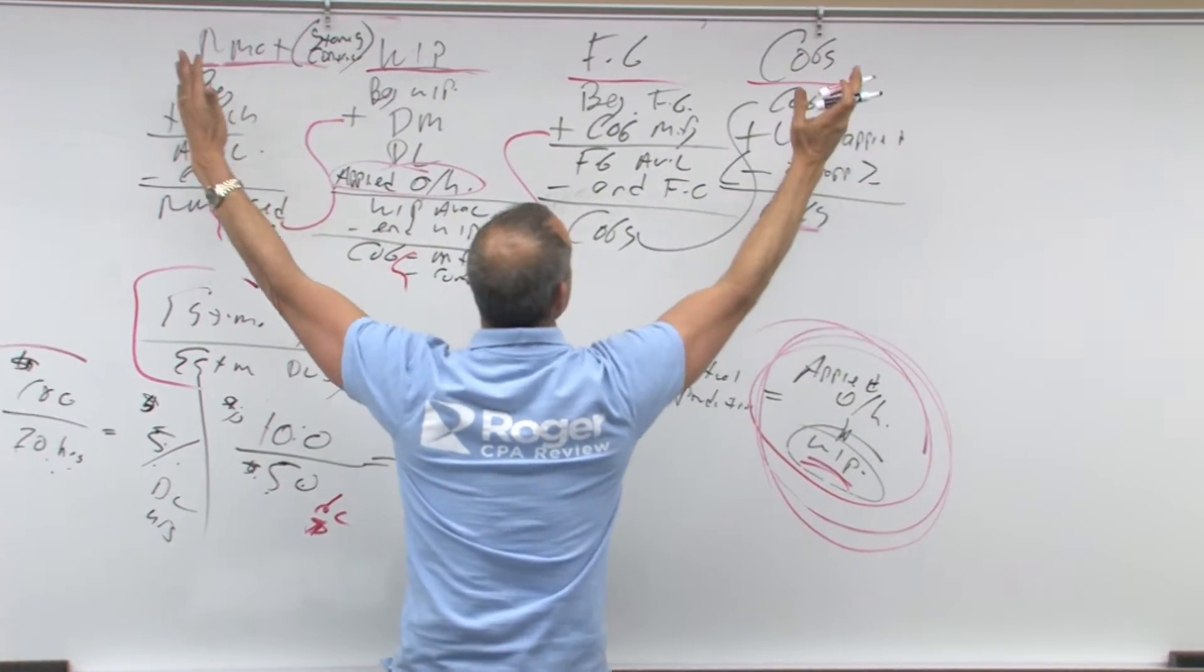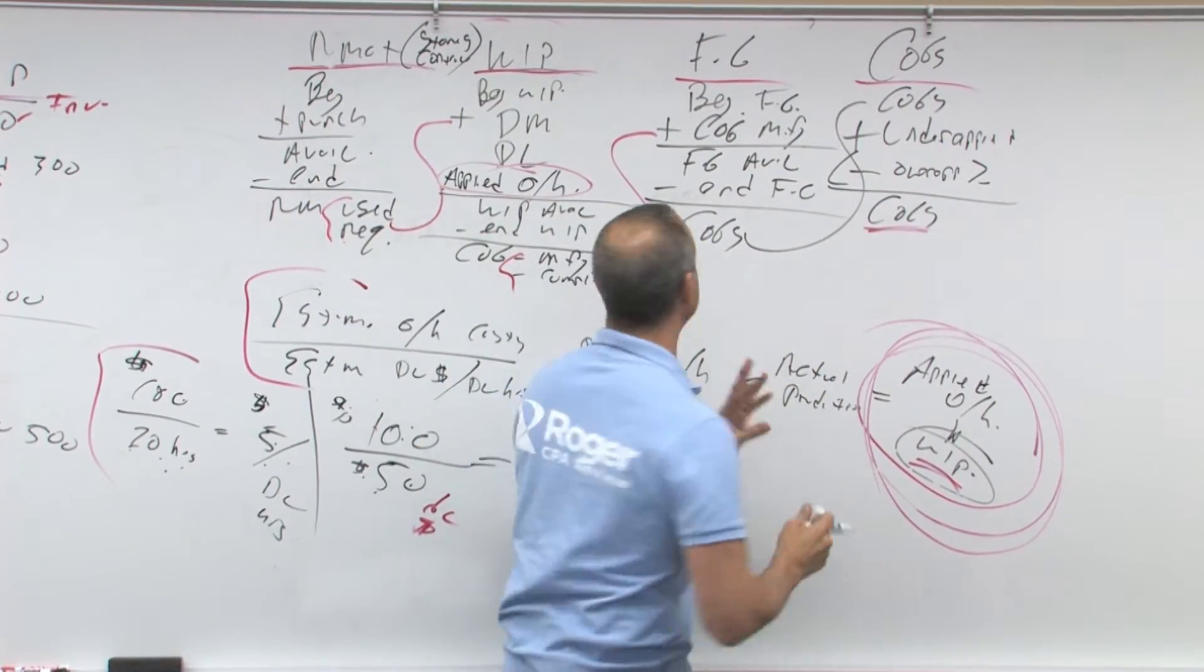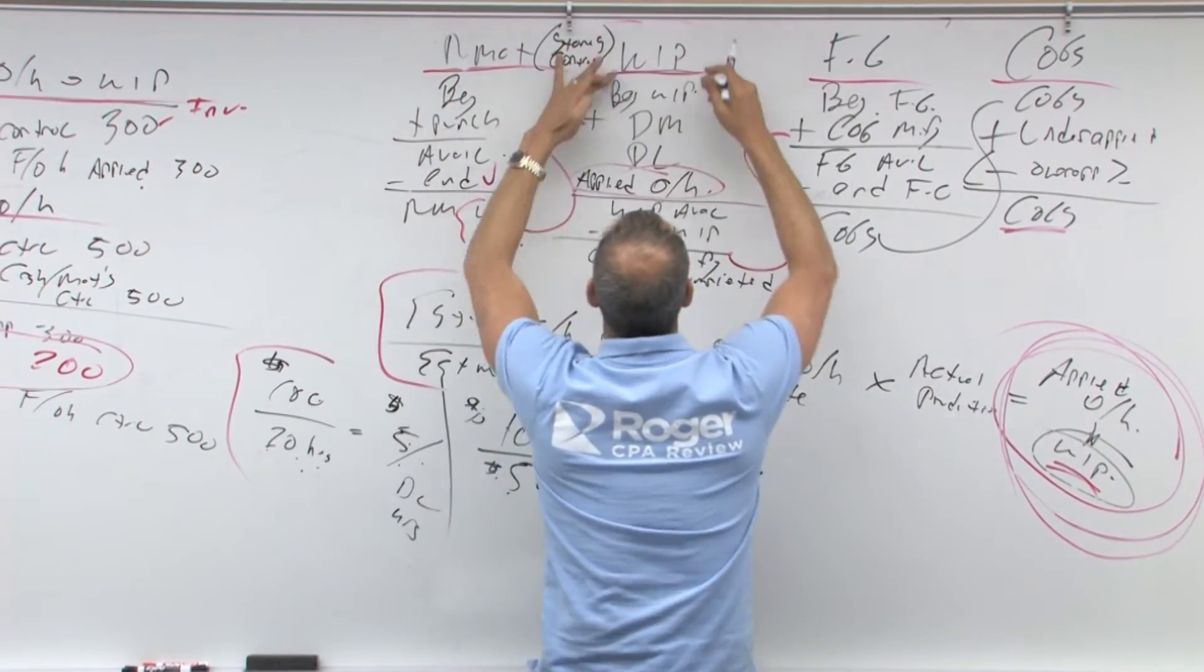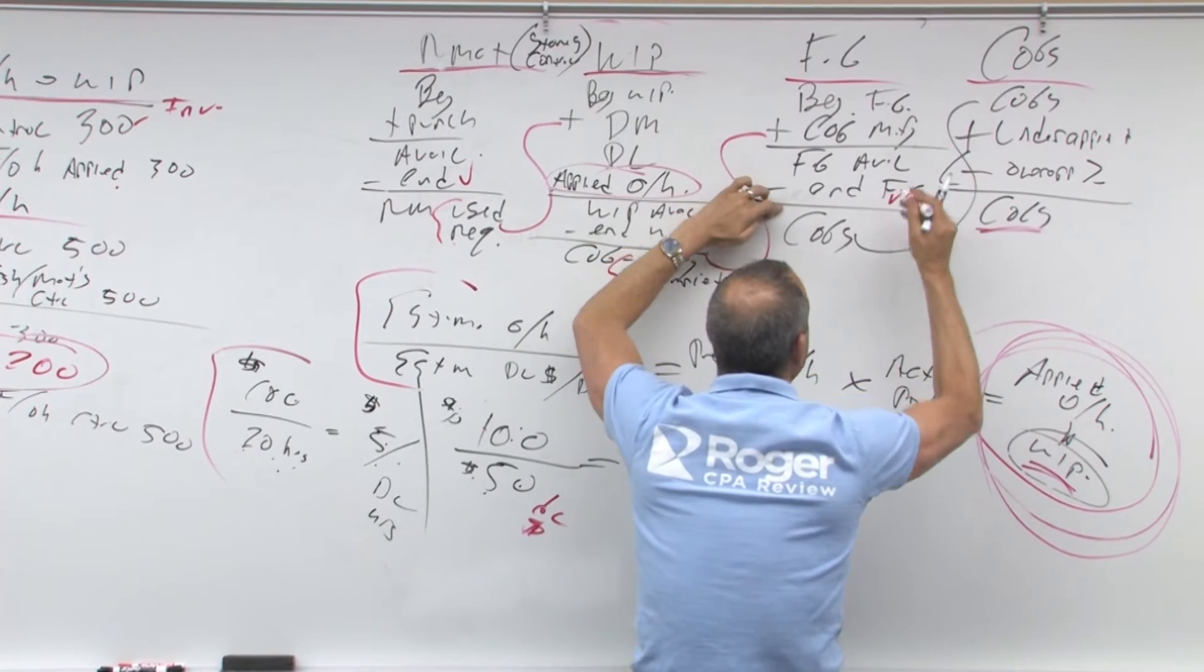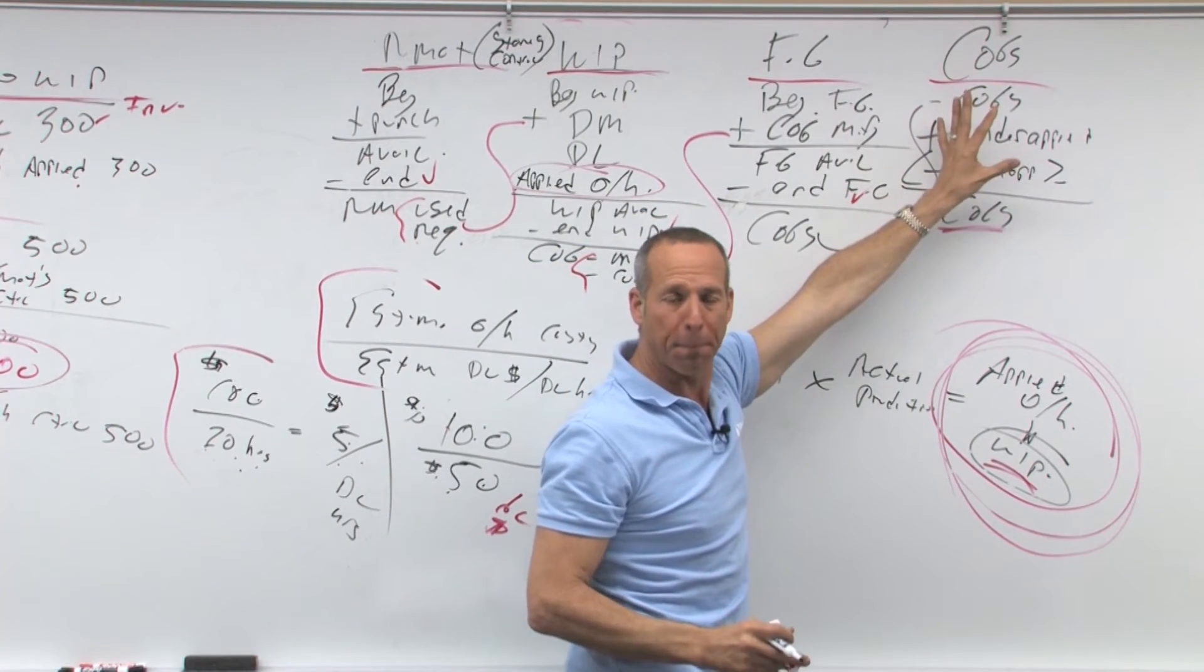So notice in a manufacturing company they have three types of inventory. Raw materials inventory because it's raw materials ending, work in process ending, finished goods ending, and then the rest goes to cost of goods sold, that's when it becomes an expense.